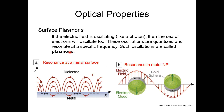This is the more formal understanding of plasmons. We visualize the metal the way mentioned previously. When we apply an oscillating electric field, the sea of electrons oscillates with the applied field. These oscillations are quantized and resonate at a specific frequency, and such oscillations are called plasmons. Here you can see it — this is the resonance at a metal surface.